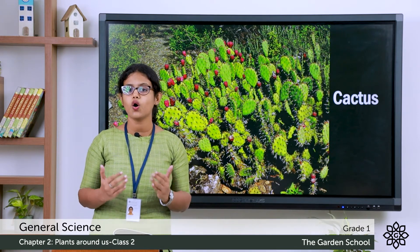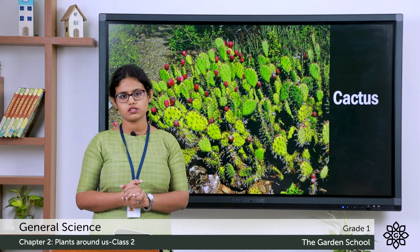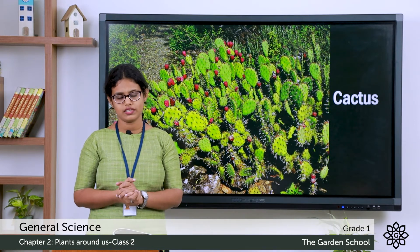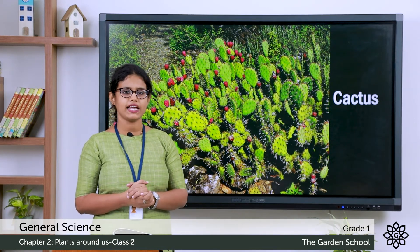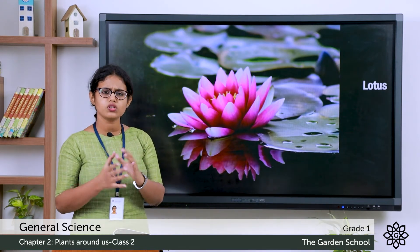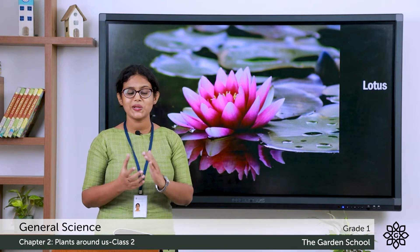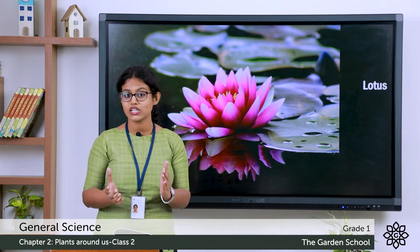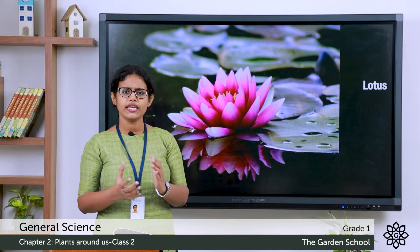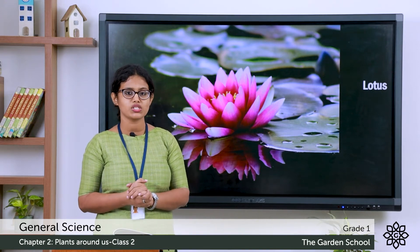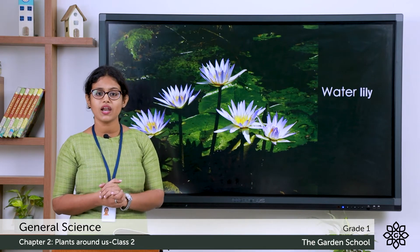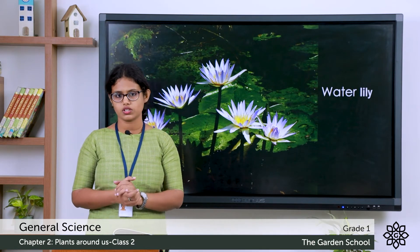These are the plants which grow on land. Next we'll see the plants which grow in water, like in ponds and lakes. One such plant is the lotus. Lotus is our national flower and it grows in water. Another example is the water lily — water lily is also a plant that grows in water.